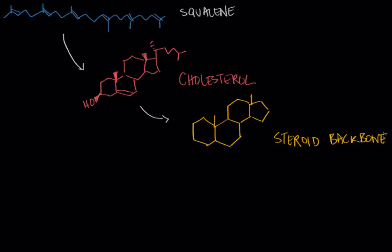And so these are the four characteristic rings of the steroid backbone. And as you can see we are a really long way off at this point from the very beginning place that we started which was that isoprene unit.